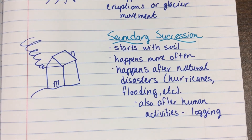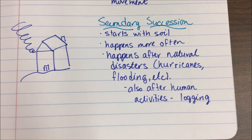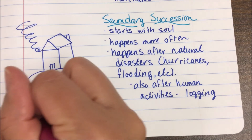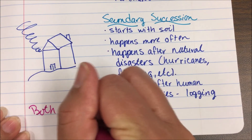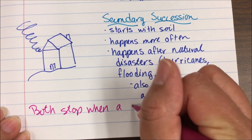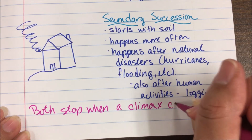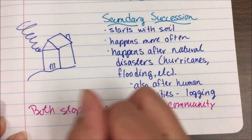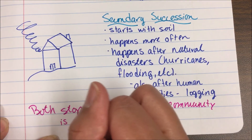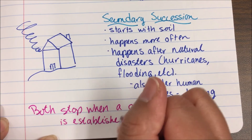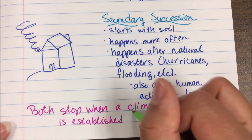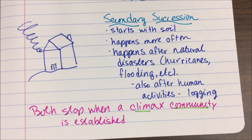After any type of succession, we have one goal: something called a climax community. Both primary and secondary succession stop when a climax community is established. Essentially, that means you have a mature, stable community.